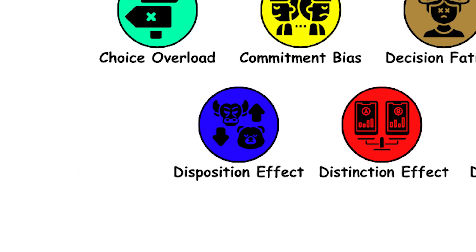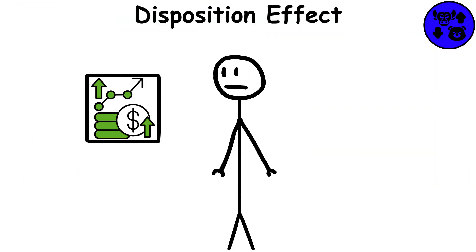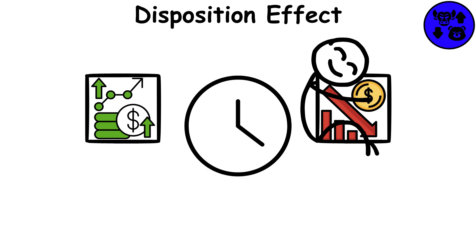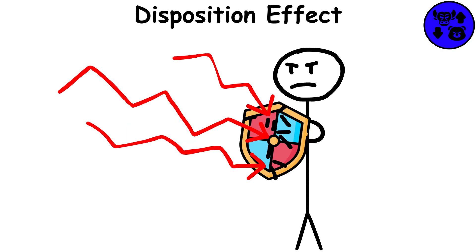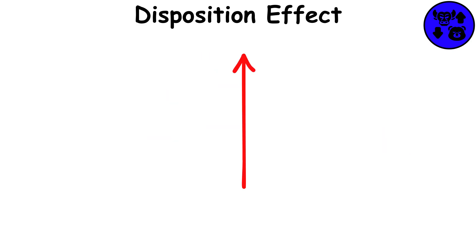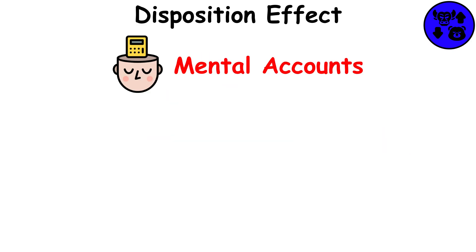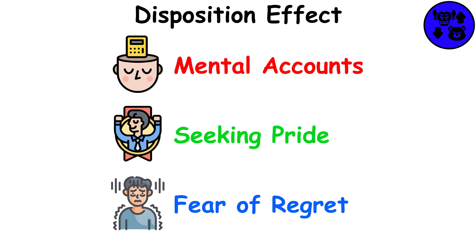Disposition effect. This is our tendency to sell winning assets too early and hold on to losing assets for too long. This is motivated by loss aversion, meaning our resistance to realizing losses even if it is a more profitable move. The disposition effect is also strengthened by keeping mental accounts, seeking pride, and fear of regret.